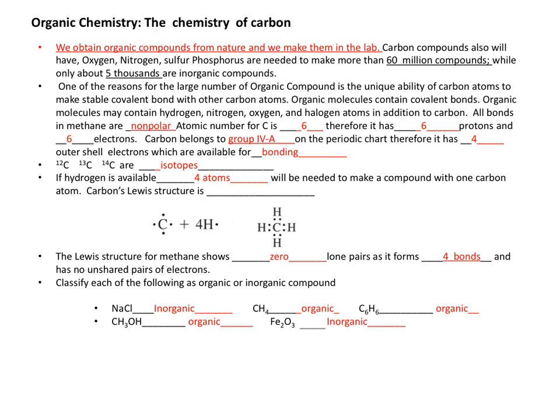We can distinguish organic compounds from inorganic compounds by exploring some of the properties. For organic compounds such as methane, it is organic because it contains only carbon and hydrogen. The molecule of benzene, which contains only carbon and hydrogen. This is an alcohol. These are organic compounds.